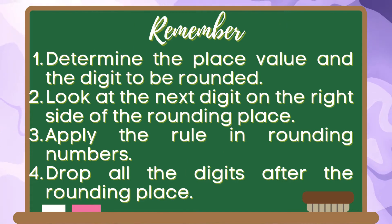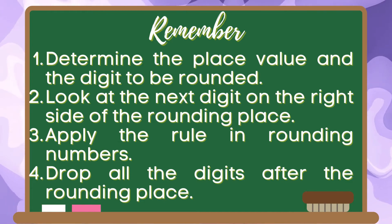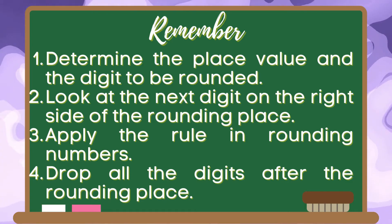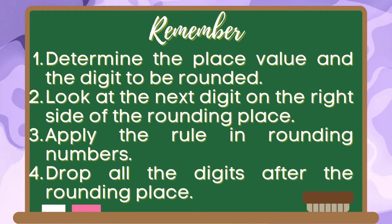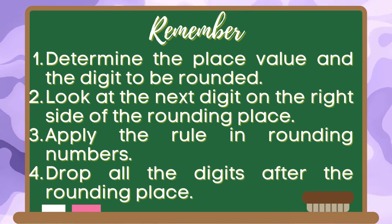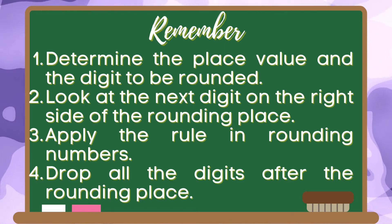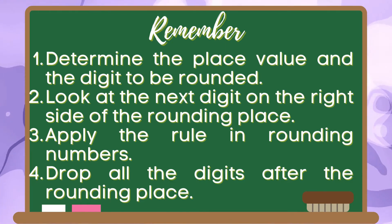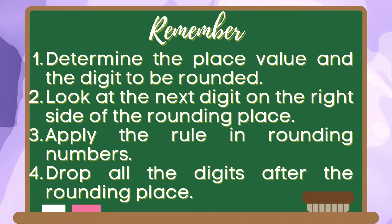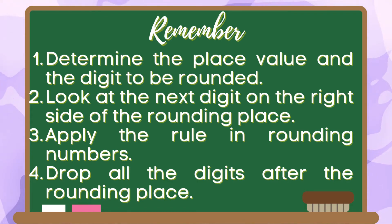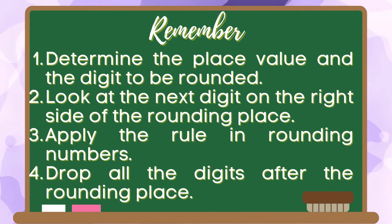Remember, to round decimal numbers, here are the steps to follow. First, determine the place value and the digit to be rounded. Second, look at the next digit on the right side of the rounding place. Third, apply the rule in rounding numbers. And lastly, drop all the digits after the rounding place.